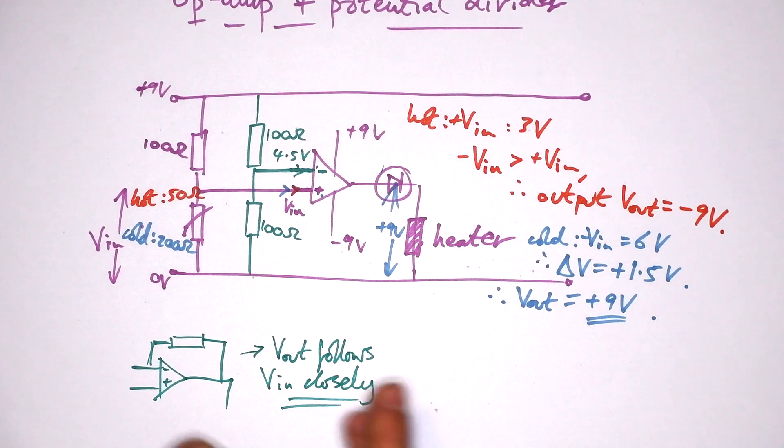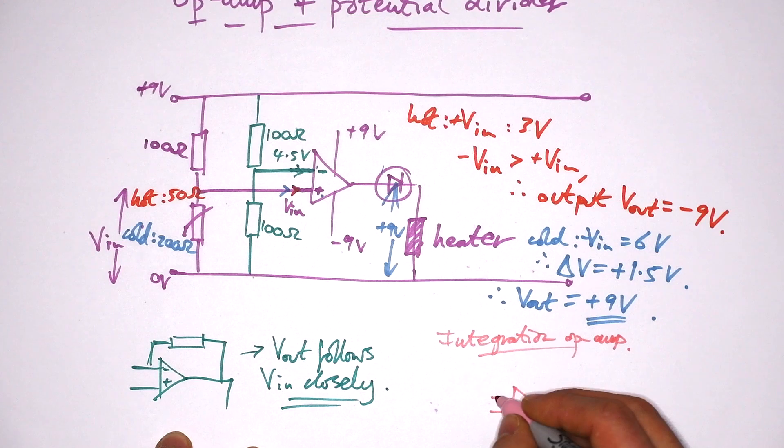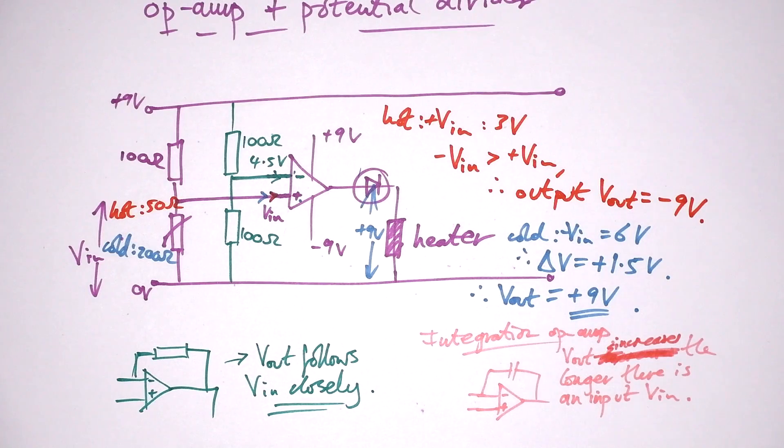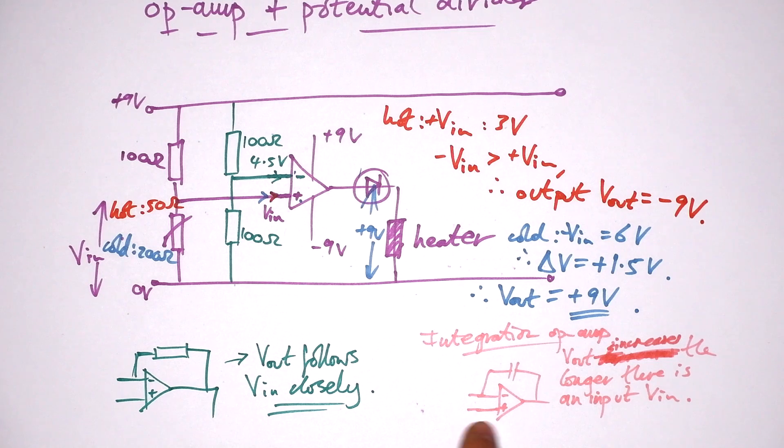And if you really want to know, we've also got the integration circuit, integration op amp circuit. Instead of a feedback resistor, we have a capacitor that links the inverting input to the output. Basically what happens is that the V out will increase the longer there is an input voltage going into the non-inverting input there. That's because as current flows out of the output, it charges the capacitor, and this reduces the amount of current that can go into the inverting input. So that means that the V out increases over time. And so because it is dependent on time, you can use that to do integration.